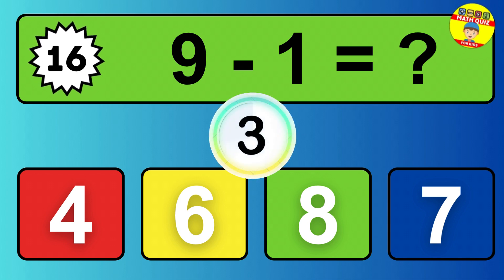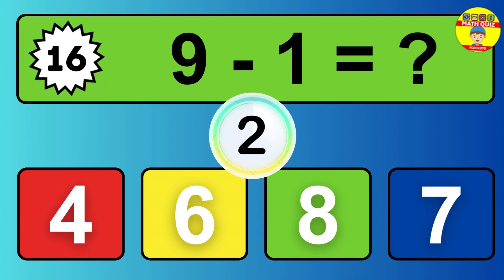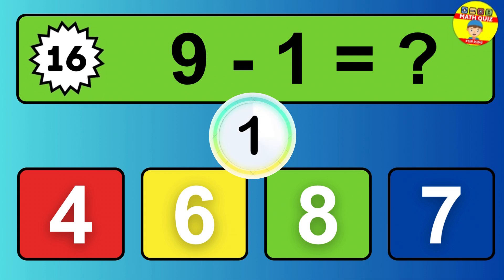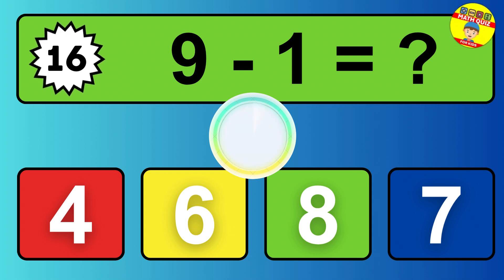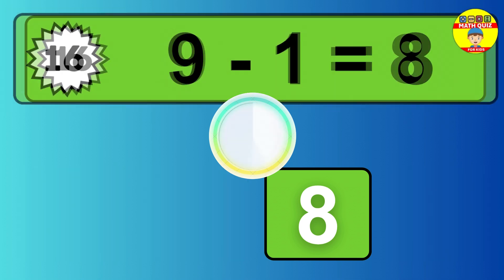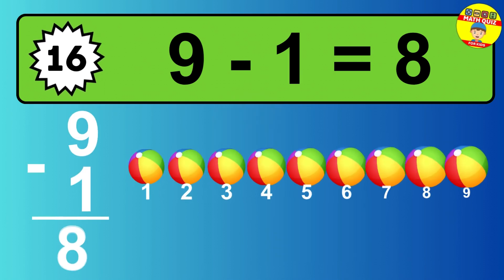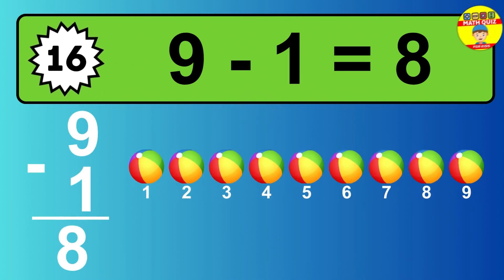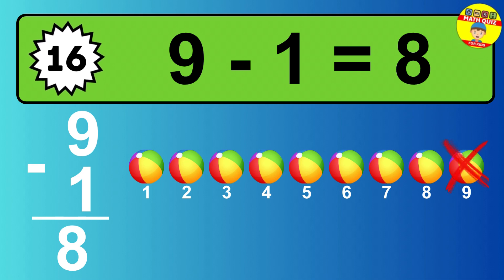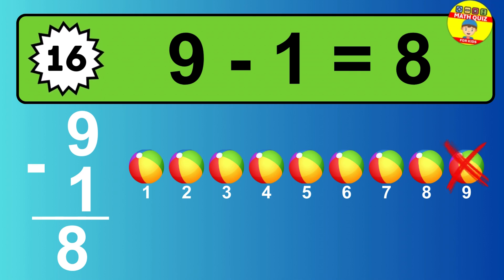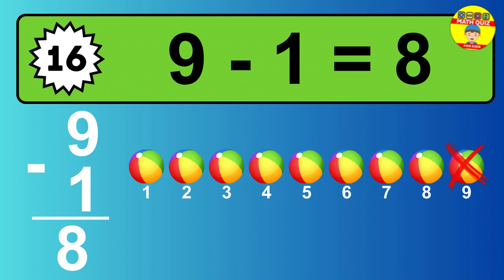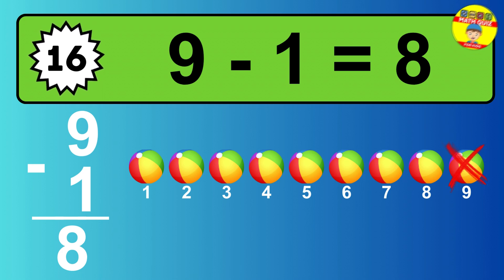Question sixteen. Nine minus one equals what? So the answer is, nine minus one is eight. Let's count it. One, two, three, four, five, six, seven, eight.